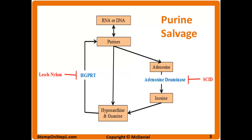A deficiency of the enzyme hypoxanthine guanine phosphoribosyltransferase, or HGPRT, is seen in Lesch-Nyhan syndrome. When you have a deficiency of this enzyme, none of those purines are going to be recycled back into new RNA and DNA. You'll then have to make completely new purines, which is inefficient on its own, but then you have real problems with all of this extra hypoxanthine and guanine that's being broken down.